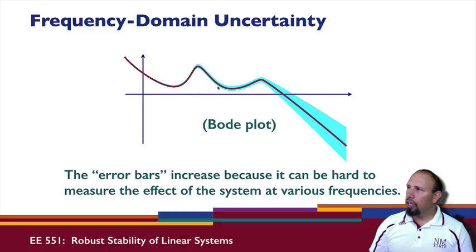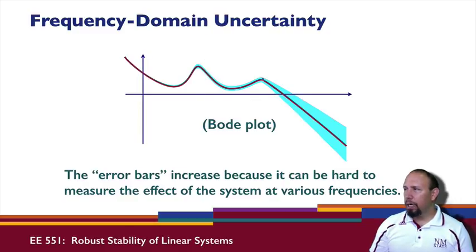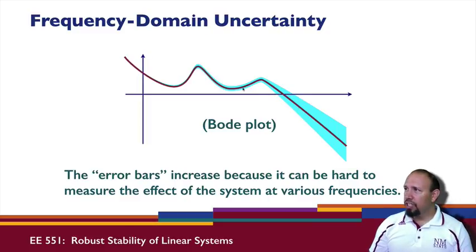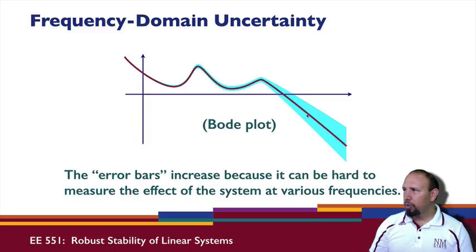The Bode plot is actually a model of the system. The blue is what we're obtaining in the experiment. Even without a model, we can still get a Bode plot. A Bode plot is, in fact, a kind of model itself — it's called a non-parametric model. What this shows is that your experiment has error associated with it that is frequency dependent.